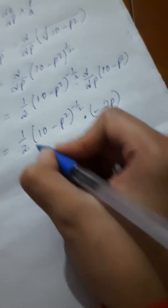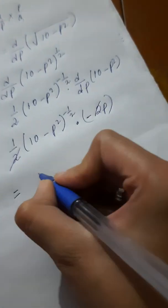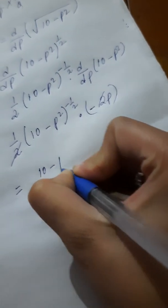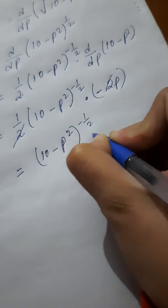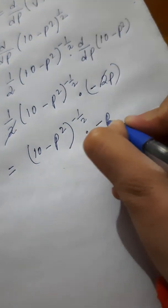Now, 2 and 2 will get cancelled. So, 10 minus p squared to the minus half times minus p.